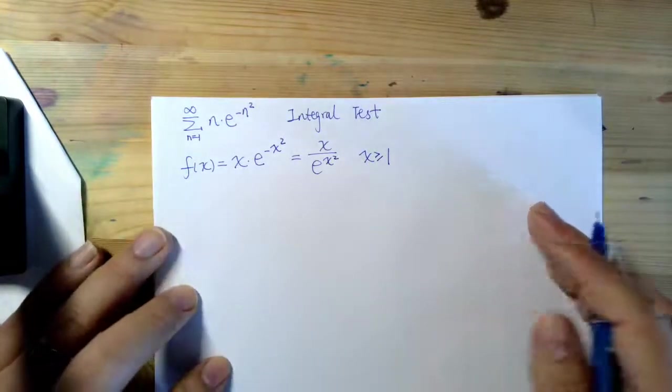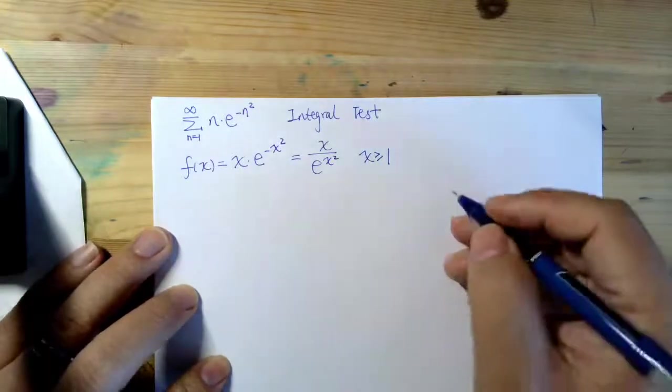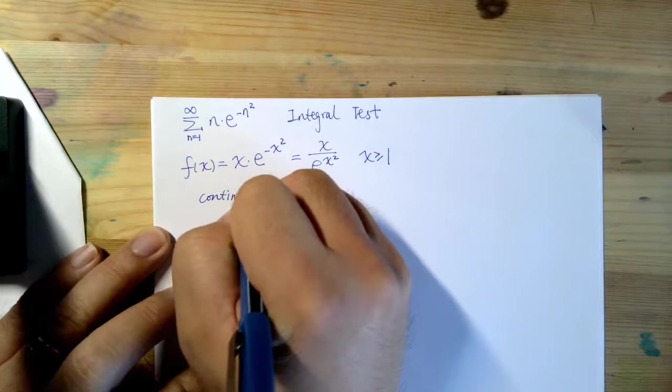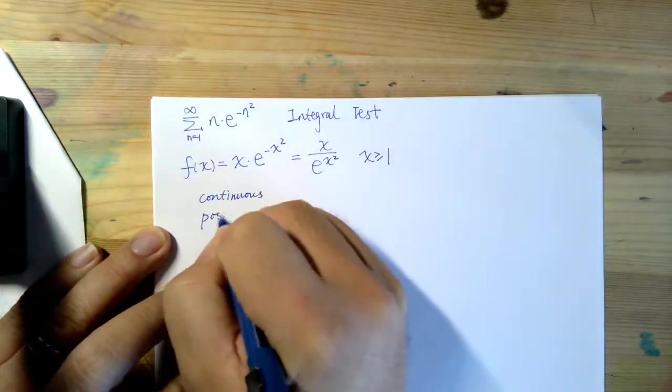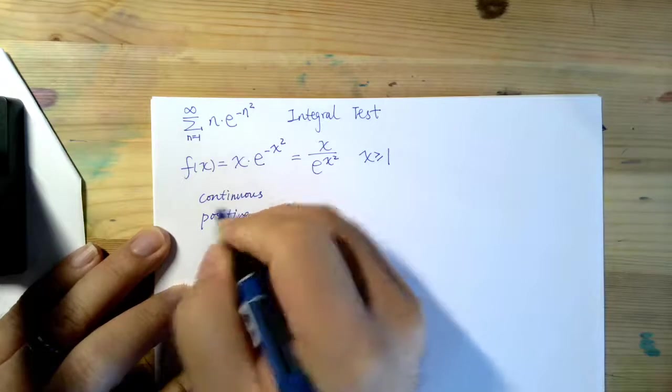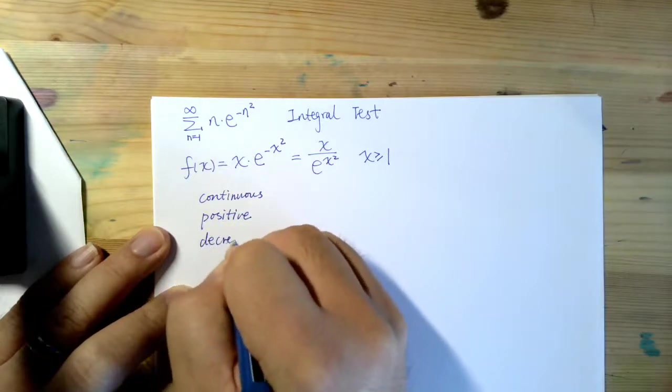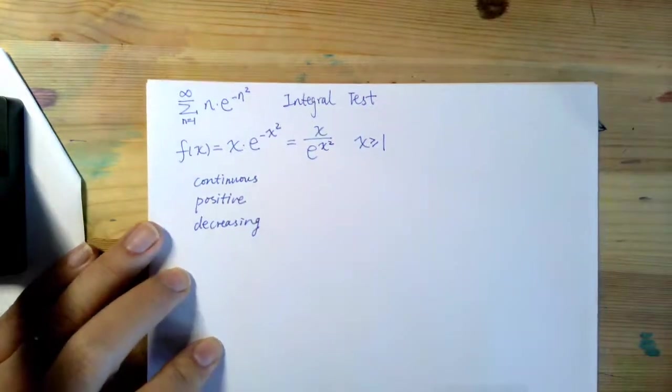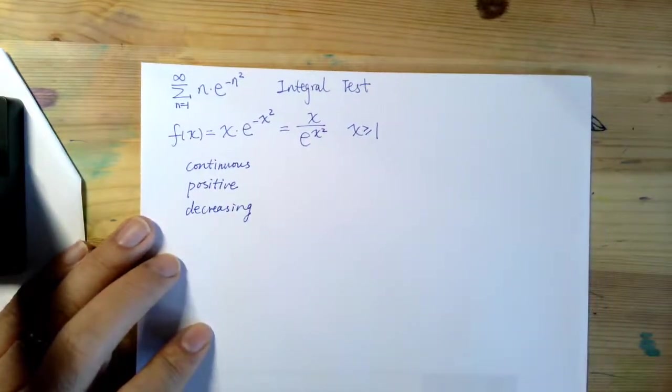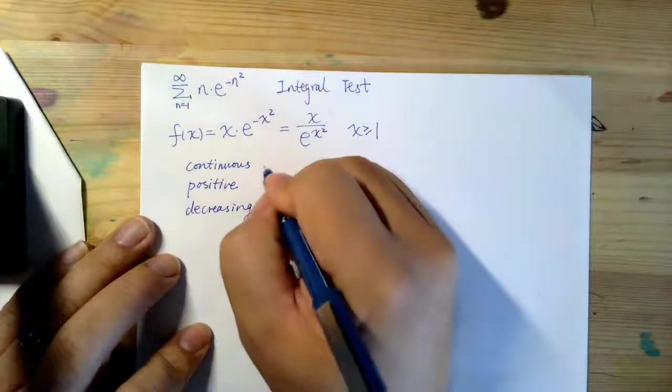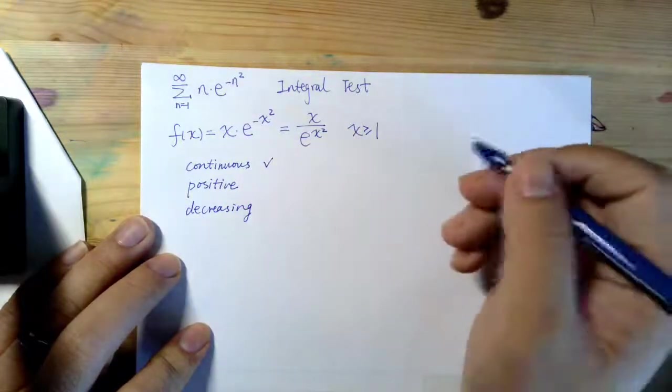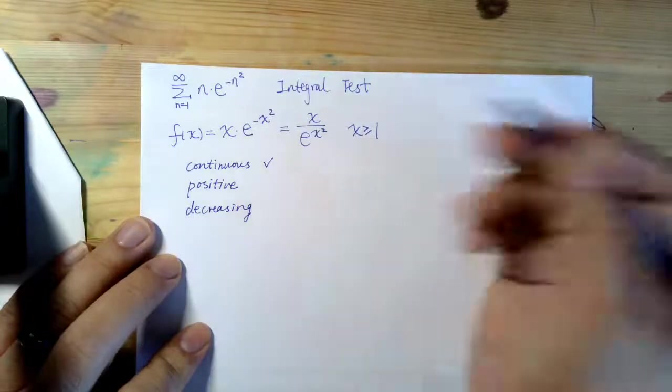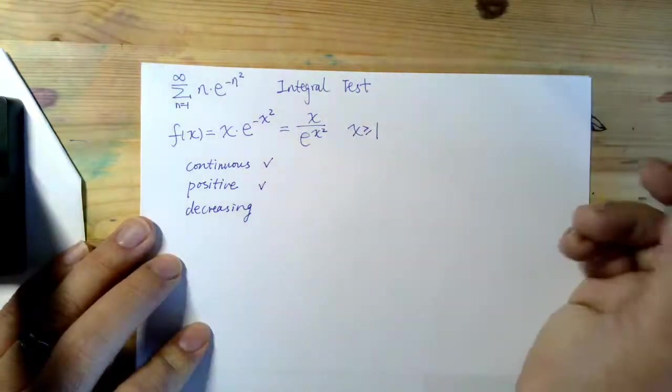So we need to check, again, three parts: continuous, positive, and decreasing. It turns out that continuous, it's obvious. For most of the cases, it is obvious. Positive, sure. e to the power of x squared, positive. x, positive. So positive over positive, sure.